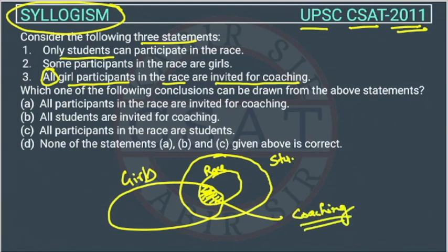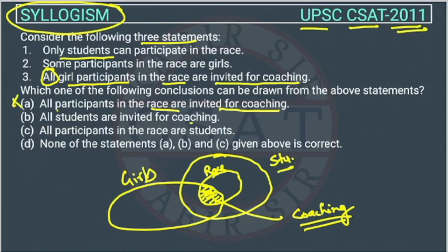Now let's check which conclusion can be drawn. Option A: all participants in the race are invited for coaching — no, only the girls among them are invited, so this is wrong. Option B: all students are invited for coaching — students are not all invited, so this is also wrong.